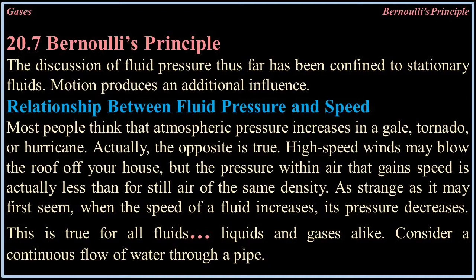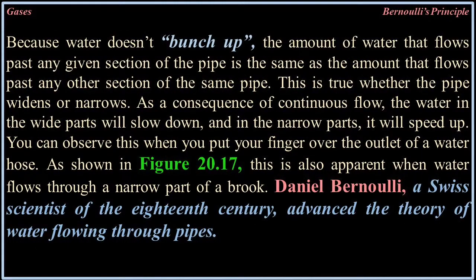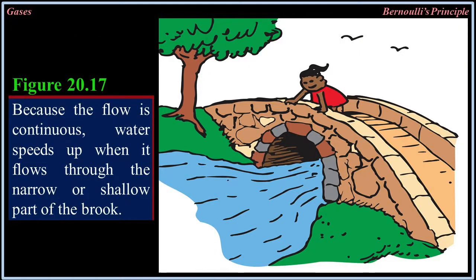This is true for all fluids — liquids and gases alike. Consider a continuous flow of water through a pipe. Because water doesn't bunch up, the amount of water that flows past any given section of the pipe is the same as the amount that flows past any other section. This is true whether the pipe widens or narrows. As a consequence of continuous flow, the water in the wide parts will slow down and in the narrow parts it will speed up. You can observe this when you put your finger over the outlet of a water hose. This is also apparent when water flows through a narrow part of a brook. Daniel Bernoulli, a Swiss scientist of the 18th century, advanced the theory of water flowing through pipes.